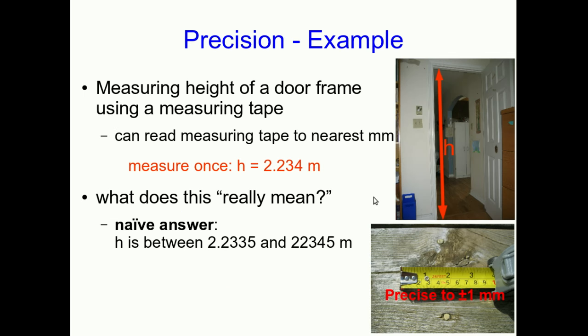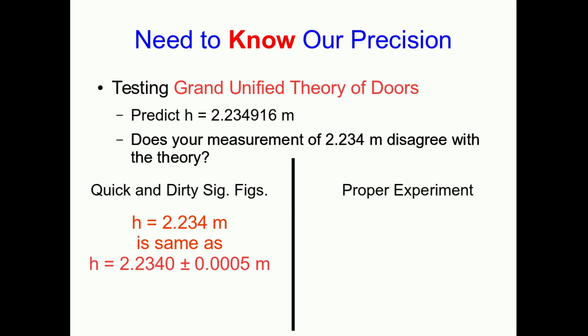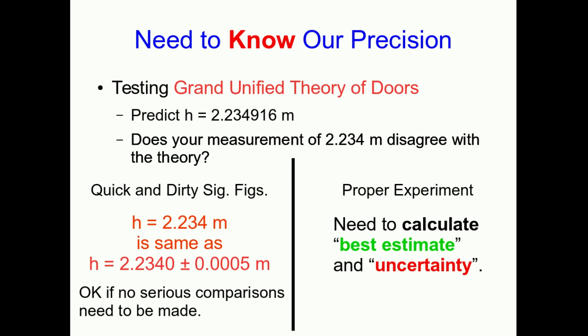I finished the last lecture by talking about how you can make a single measurement and then just assume that you have measured to within the precision of your measurement instrument and this gives you an estimate of your uncertainty, but that that is too naive. The proper way to do it is to use statistics and that means you need to make multiple measurements and then you're going to use the statistics of those multiple measurements to estimate what your most likely value of the thing you're measuring is and where you think the range that it might lie within is.